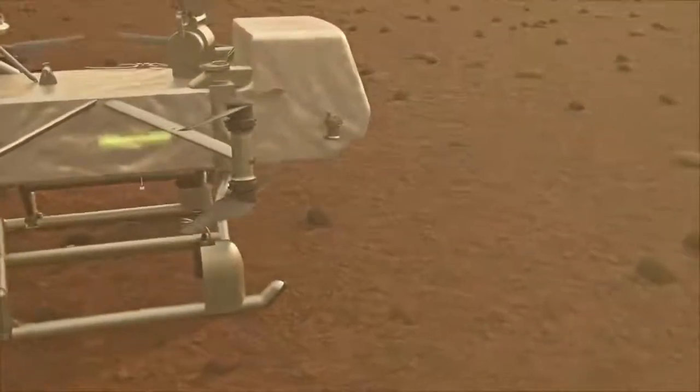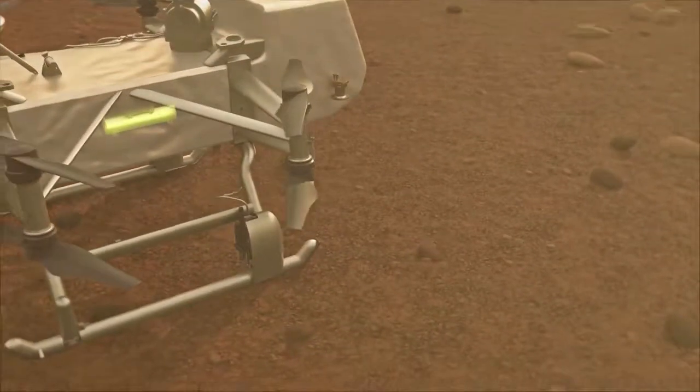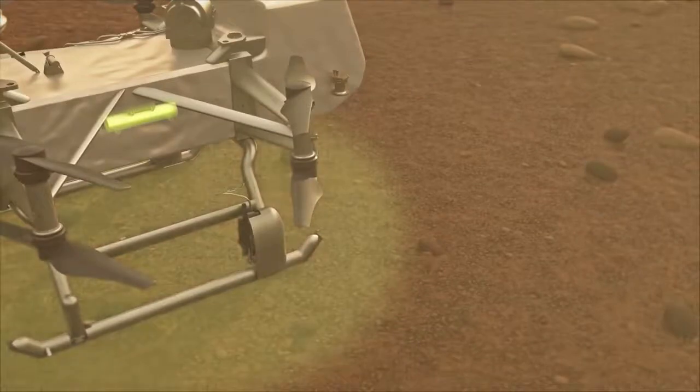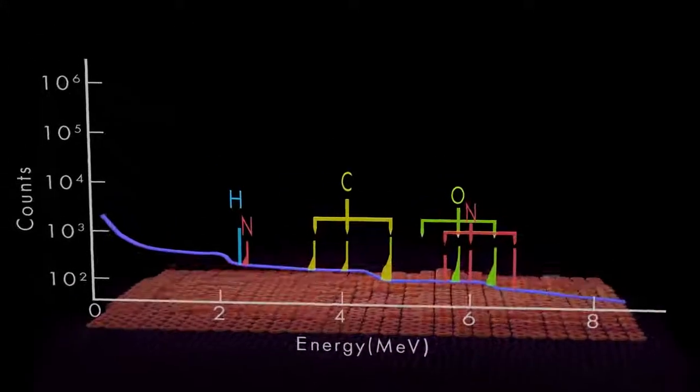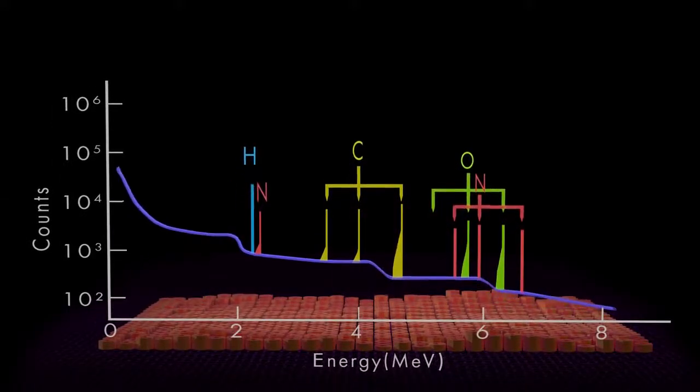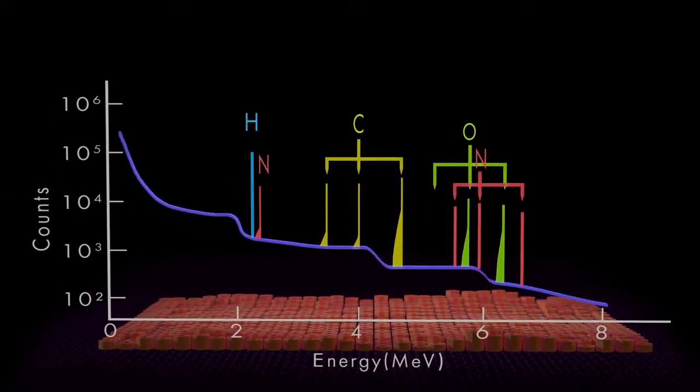At each new landing site on Titan's surface, Dragonfly uses a pulsed neutron generator and onboard gamma-ray sensor to detect key elements such as carbon and hydrogen in organic materials or oxygen in water ice.